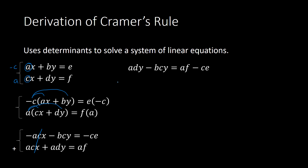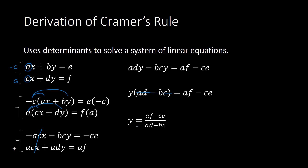Our objective was to solve for one of the variables. We got the X's to cancel, so now we can solve for Y. Notice the first two terms both have Y, so I can factor out the Y, and I'm left with AD minus BC in parentheses. I can then solve for Y by dividing both sides by AD minus BC, and I get Y equals AF minus CE over AD minus BC.